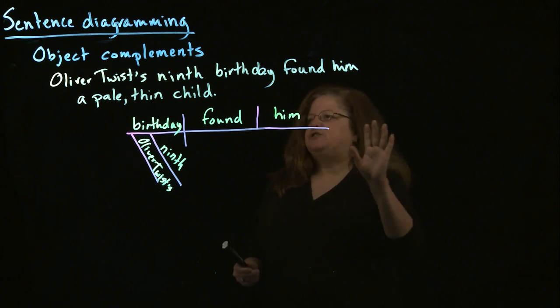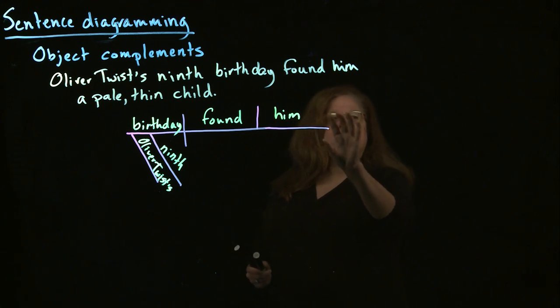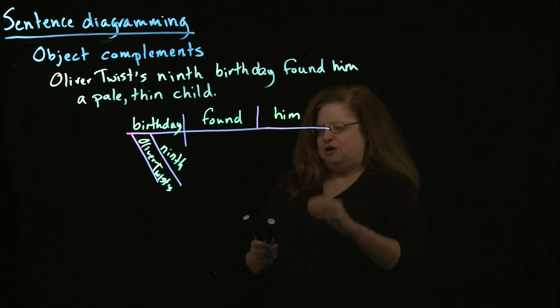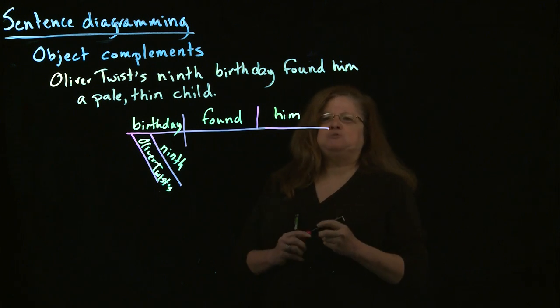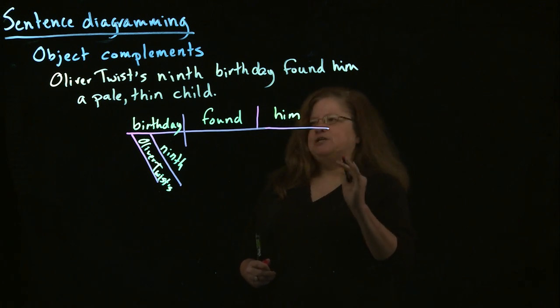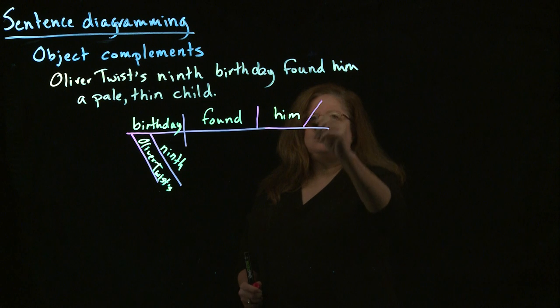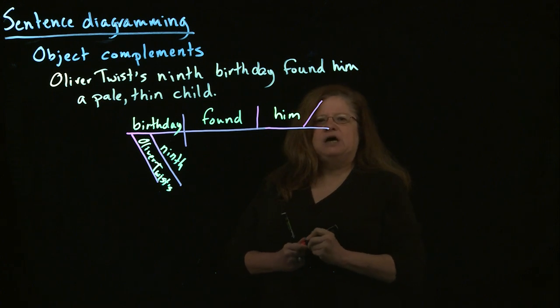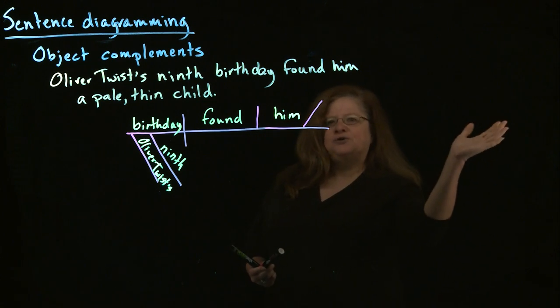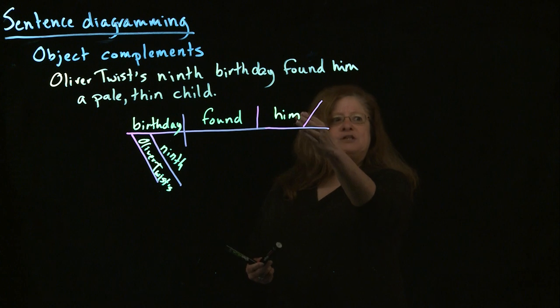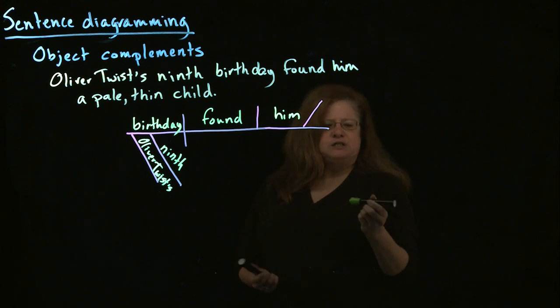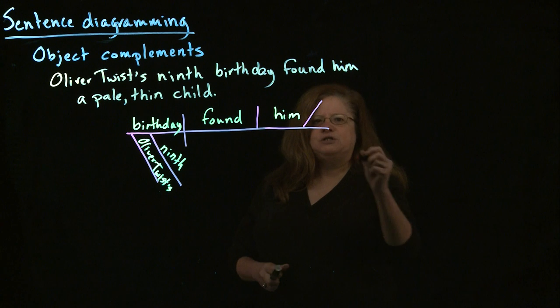And the difference between a subject complement and an object complement is very small. Where a subject complement tilted back toward the subject of the sentence, an object complement, you have this line tilting toward the other end of the sentence, where the object is. So, this tilts toward the back of the sentence. It's modifying the object.